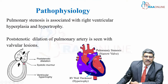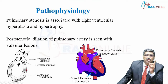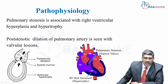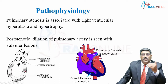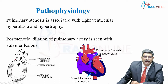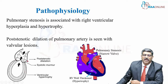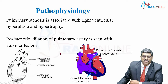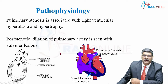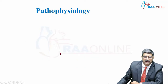Moving to pathophysiology: with pulmonary stenosis, two things happen. First, there is right ventricular hypertrophy. Second, in the pulmonary artery, there is poststenotic dilatation. These are the two main consequences of pulmonary stenosis.